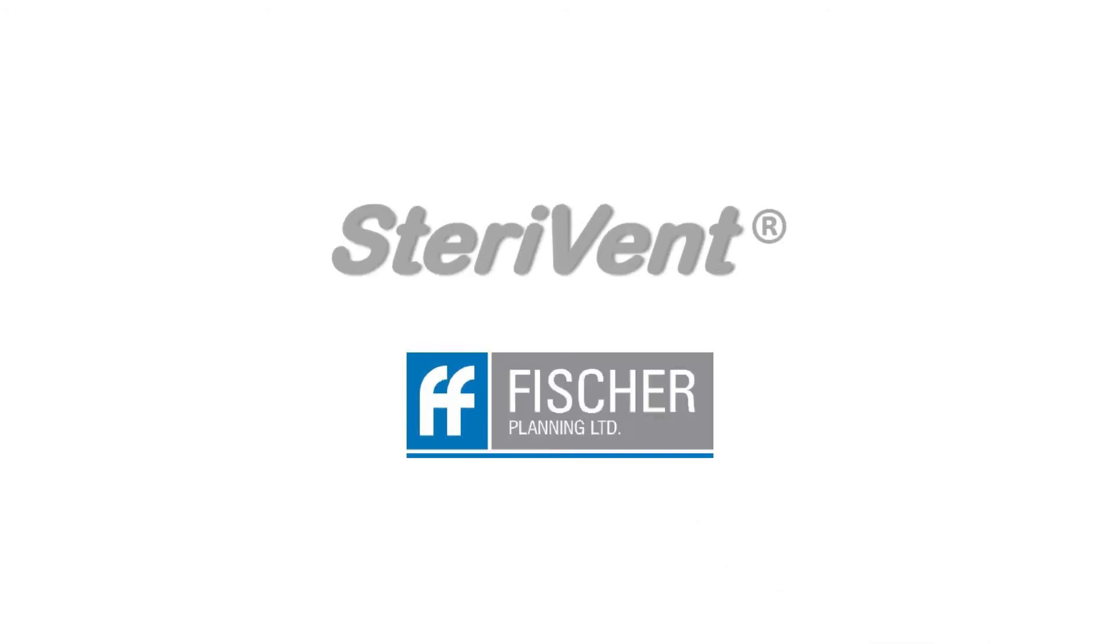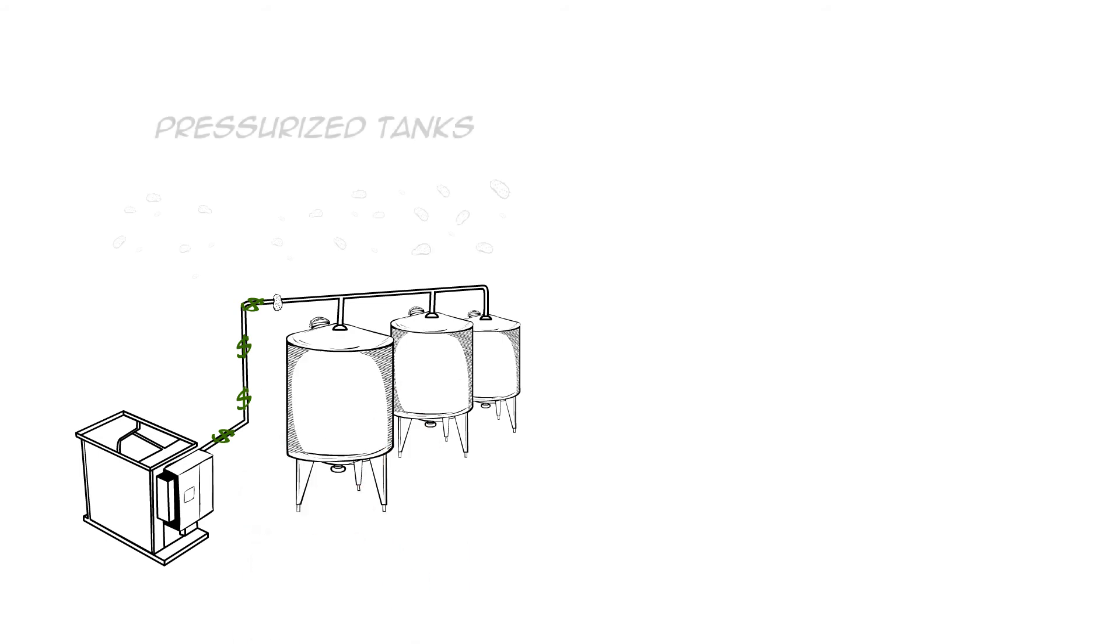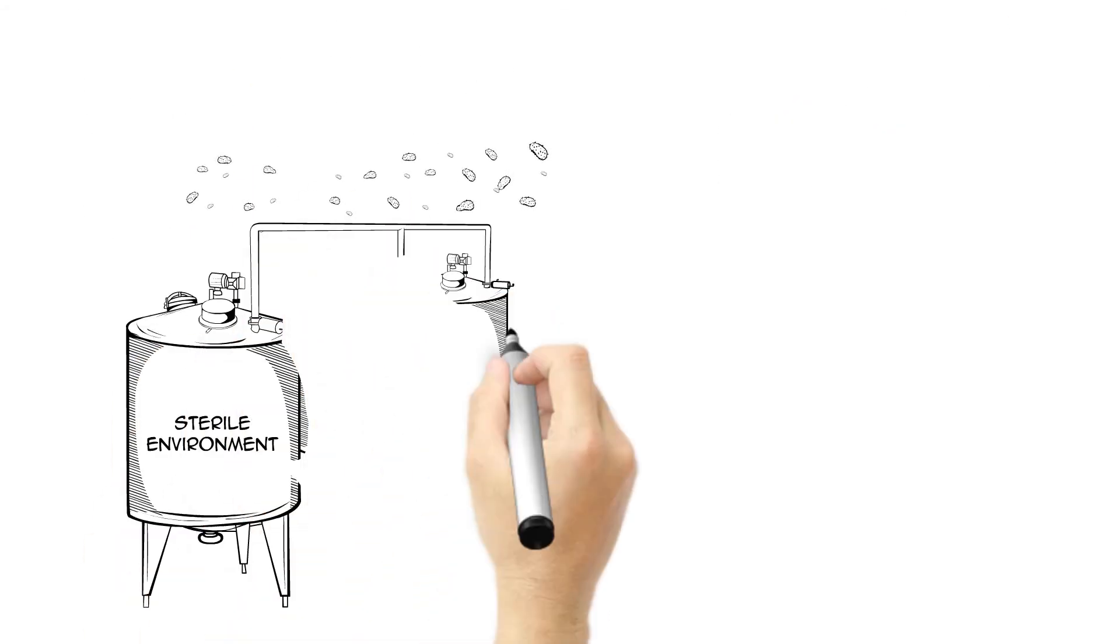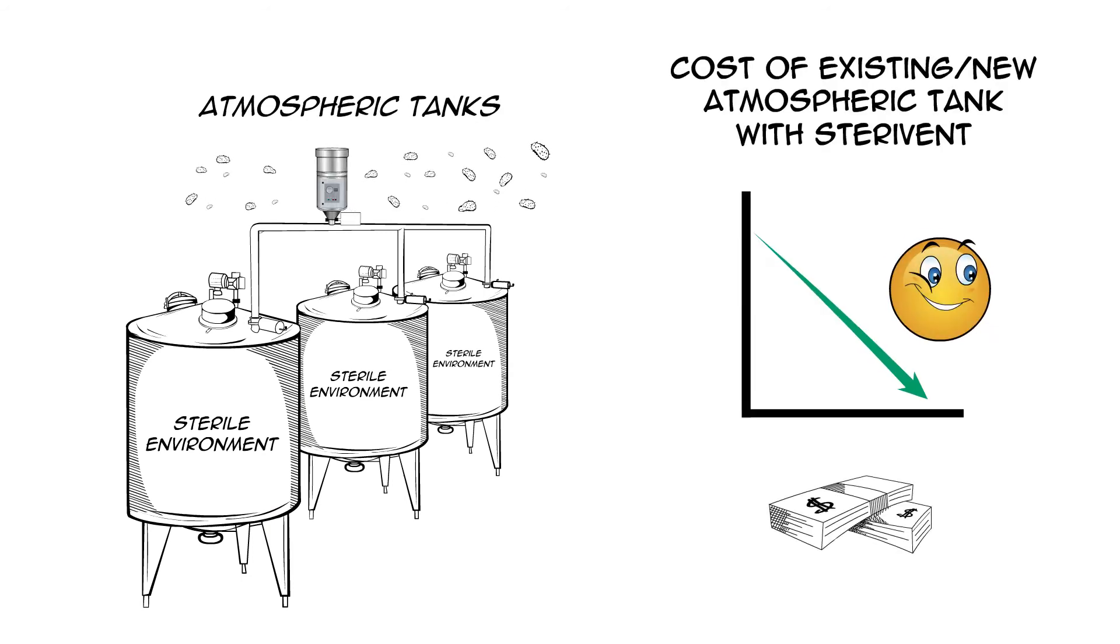So now you know that integrating the SteriVent system into your current production line can improve the quality of your existing product, but it can also help you save money. There is no need to invest in a very expensive pressurized tank. An existing or new atmospheric tank with a SteriVent system on top can be used instead.